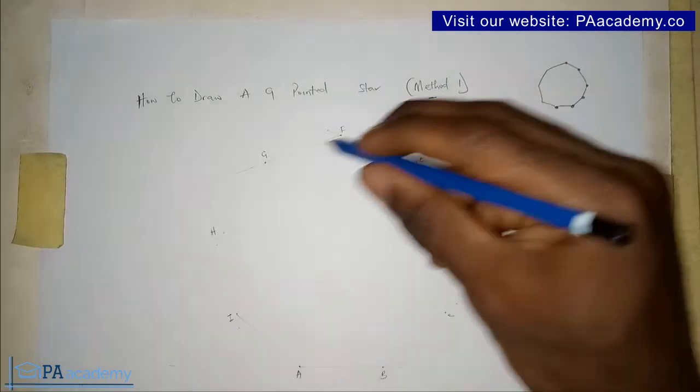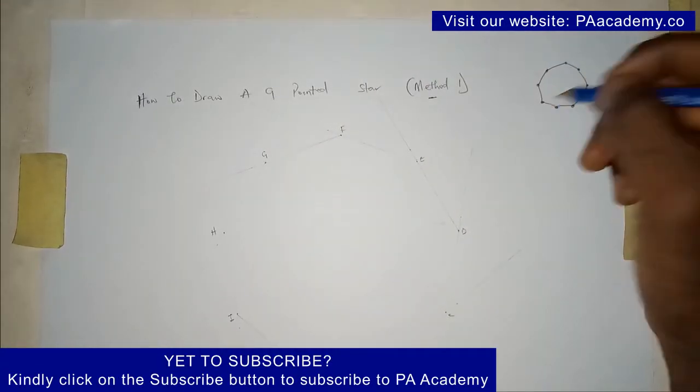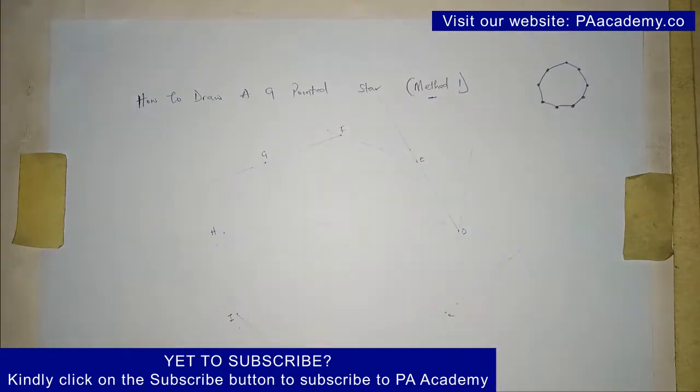Those are the points that I've just lettered A to I. Just to be clear in case you are confused about all these points that I'm marking here, since the nonagon I have here is not very clear, like I said, you make it very faint because just the vertices are what we need.